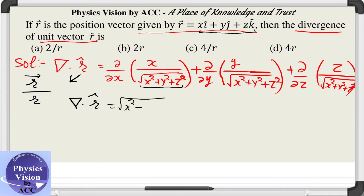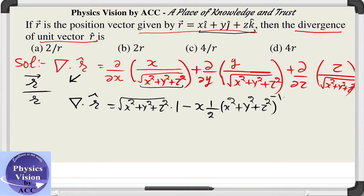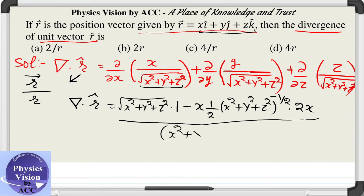By using the quotient rule: x squared plus y squared plus z squared comes up, the derivative of x is 1, minus x as it is multiplied by the derivative of the square root term, which is one-half times (x squared plus y squared plus z squared) to the power minus one-half, times 2x. This is all divided by x squared plus y squared plus z squared. This is the first term, the derivative with respect to x.